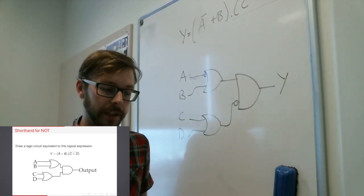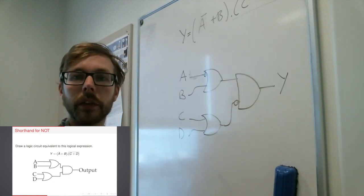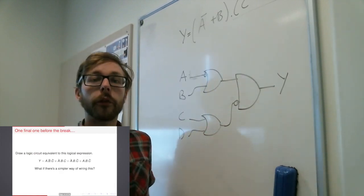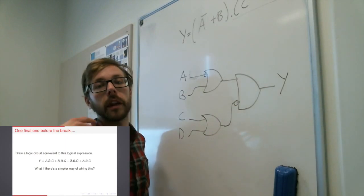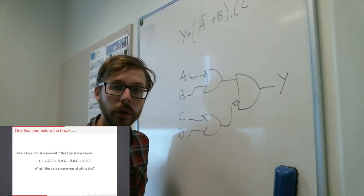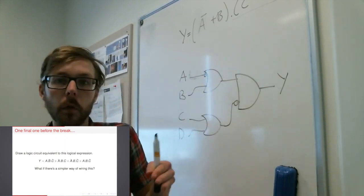and so it's much, much easier to just get rid of that gate and have it as a little circle instead. So finally, what if you've got an expression like this? This has three inputs and four terms, it's got four separate OR gates,